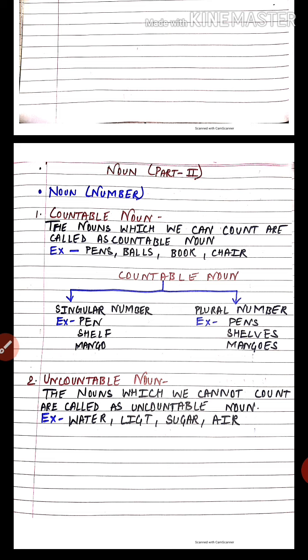Next is uncountable noun — nouns which we cannot count. For example, water: if I give you a bucket of water and ask you to count it, it is not possible. Light: if a ray of light enters your room, you cannot count it. Sugar: if I give you 5 kg of sugar and ask you to count the crystals one by one, it is not possible. Air is also something we cannot count. So these all come under uncountable noun.